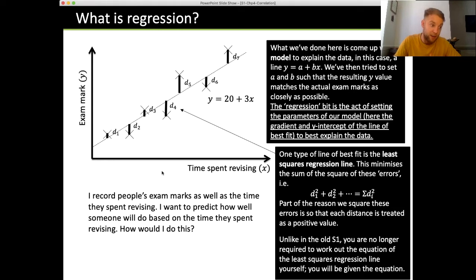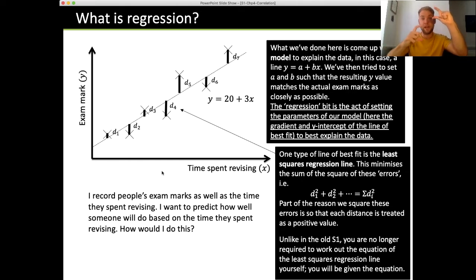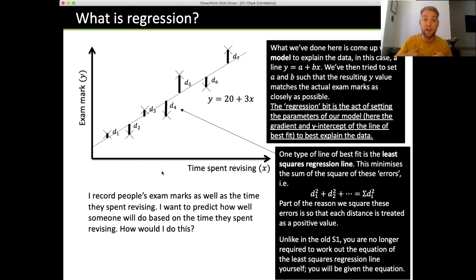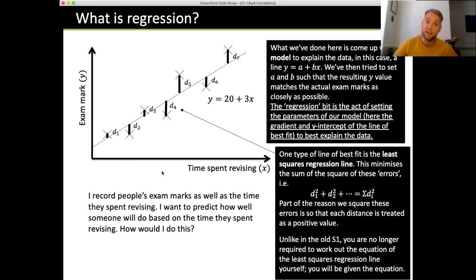The reason we square the errors is that sometimes a point is above the line and sometimes below, giving positive and negative values. To make them all comparable, we square them to get the distance away. If you were one above the line but two below, you'd have 1 and negative 2. But if you square both, you get 1 and positive 4 — both positive and easier to compare. But you don't need to know any of that right now.